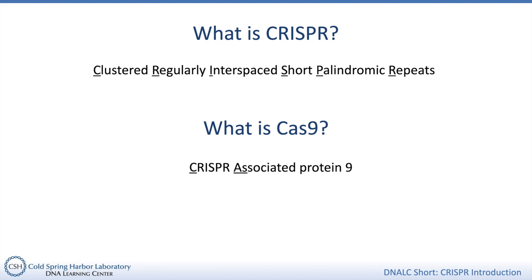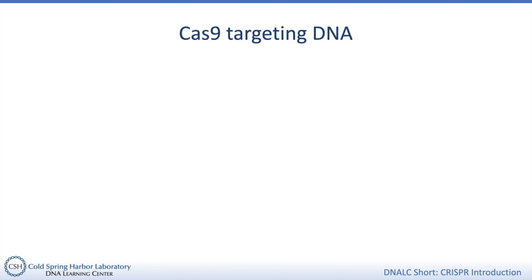There are multiple Cas proteins but today I'm mostly going to focus on Cas9. Before we start talking about how scientists can edit genomes with Cas9, I think it's useful to understand a bit more about how Cas9 cuts specific sequences in DNA. So how does Cas9 target a specific DNA sequence? Target specificity in Cas9 is not determined by the protein itself — it's determined by an interaction between an RNA molecule and the target DNA.